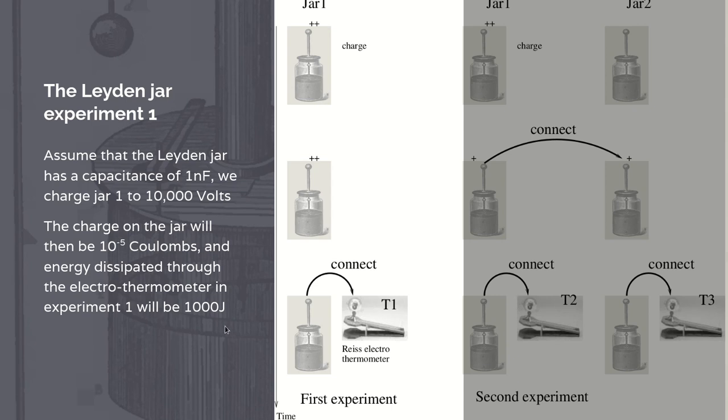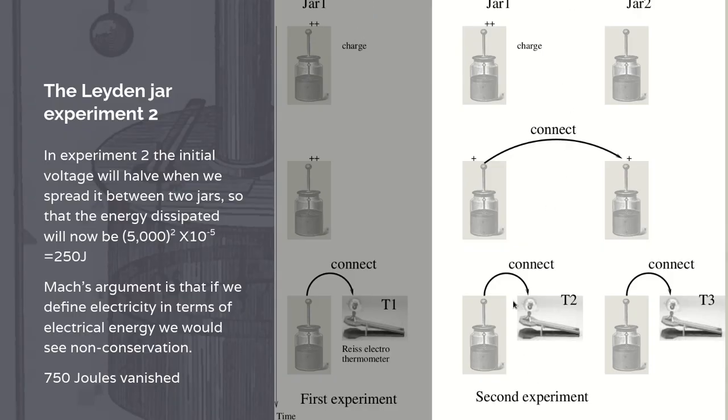So this is just a simple experiment. We then do the second sequence of actions, where we have one jar, connect it to a second jar, and then discharge each of these through an electro-thermometer. The initial voltage is going to halve when you share the charge across two. And because of the square relationship between voltage and energy, the effect is that you've reduced the energy that is dissipated to a quarter. Now, it appears that 750 joules has vanished when you do that.